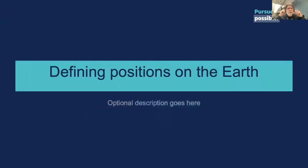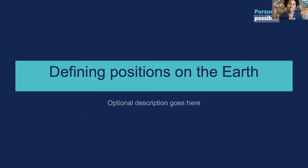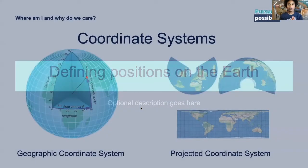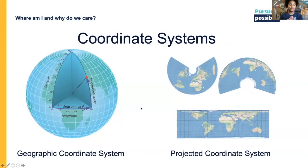I'm going to pause here and turn this over to Doris, who's going to talk about defining positions on the Earth. Just a caveat — if you're confused, just realize this is a very confusing subject. Feel free to ask questions in the chat window so we can address them. So we have two types of coordinate systems: geographic coordinate systems and projected coordinate systems. Geographic coordinate systems measure angles from the center of the Earth relative to the equator and the prime meridian at Greenwich.